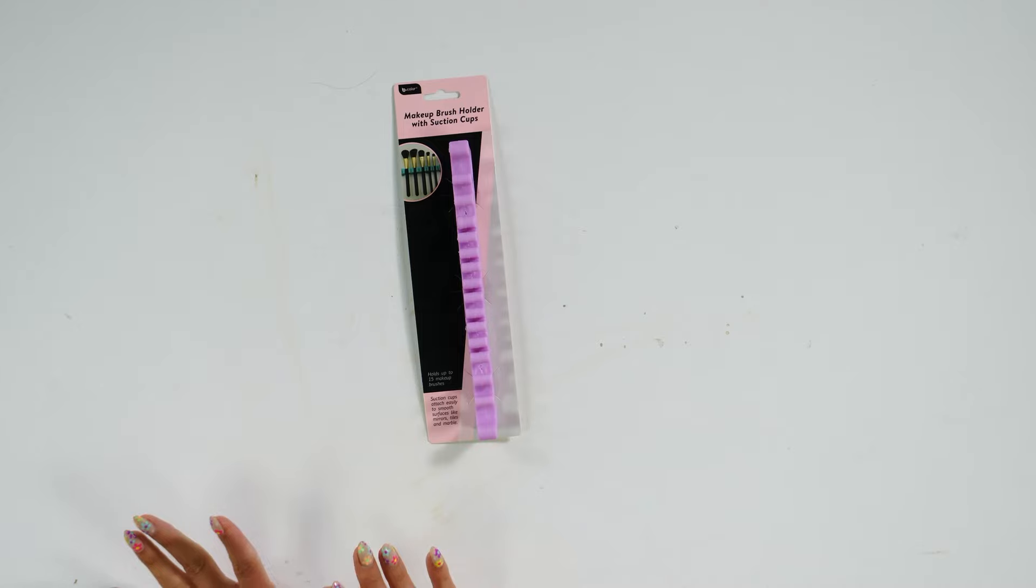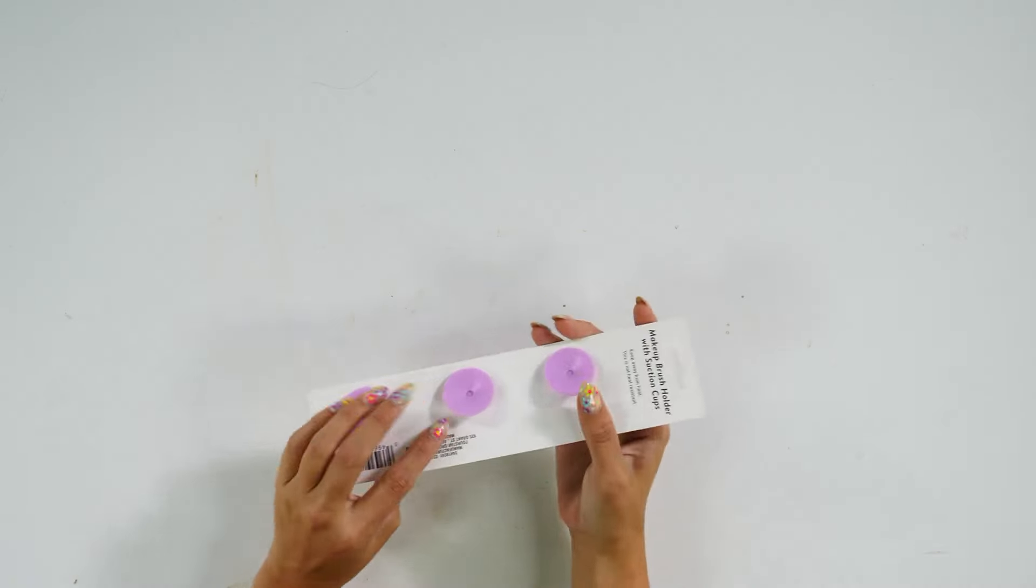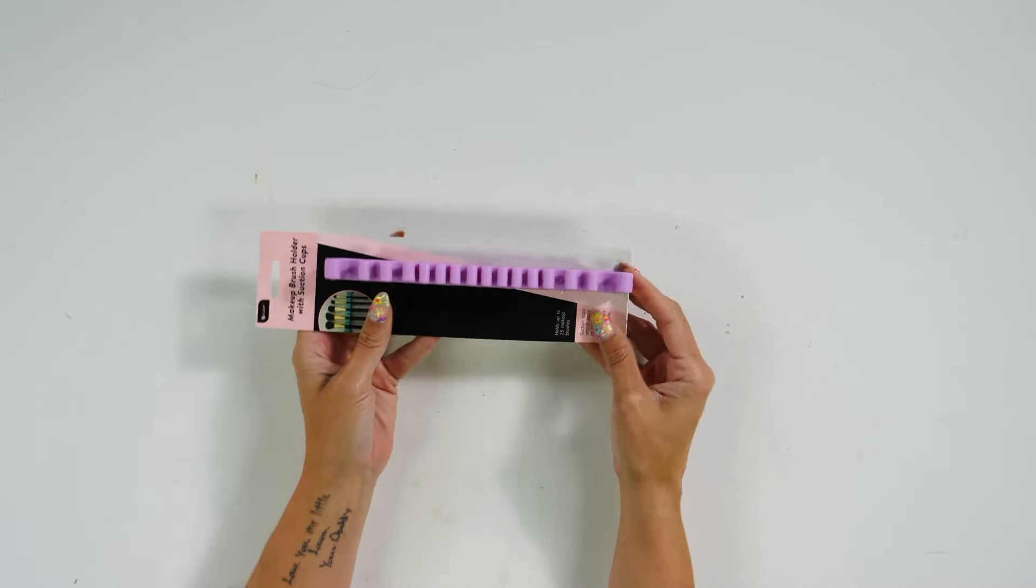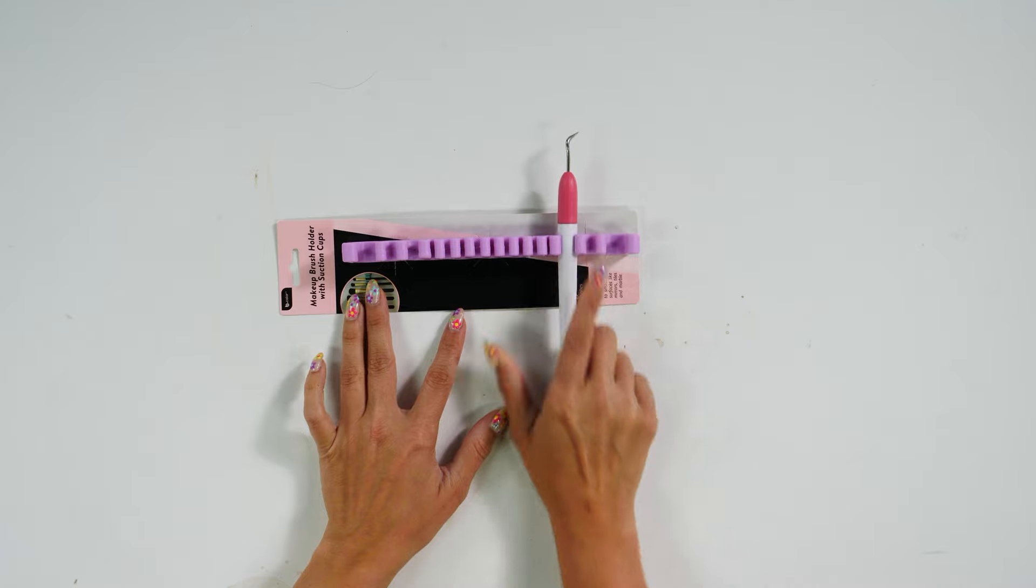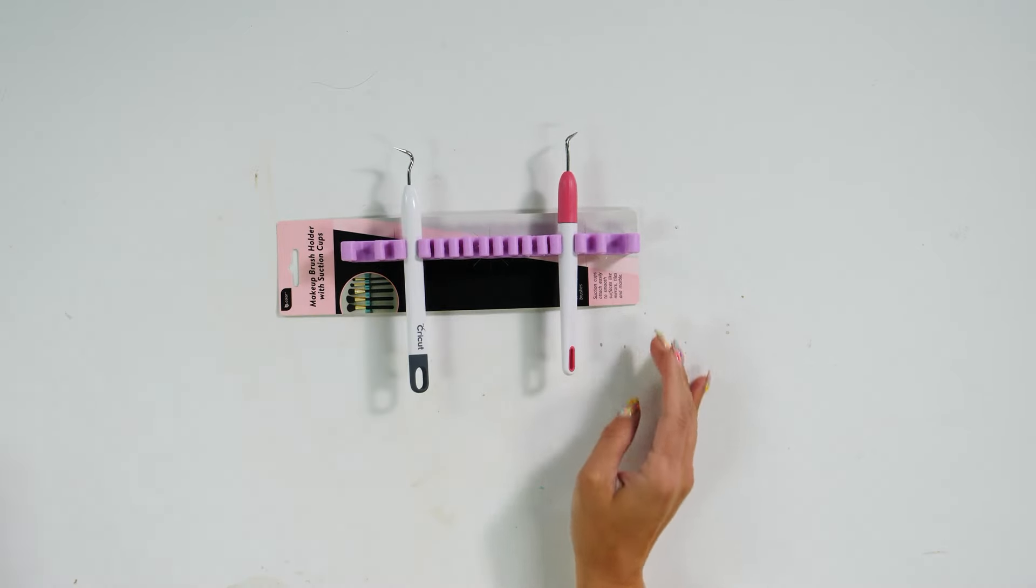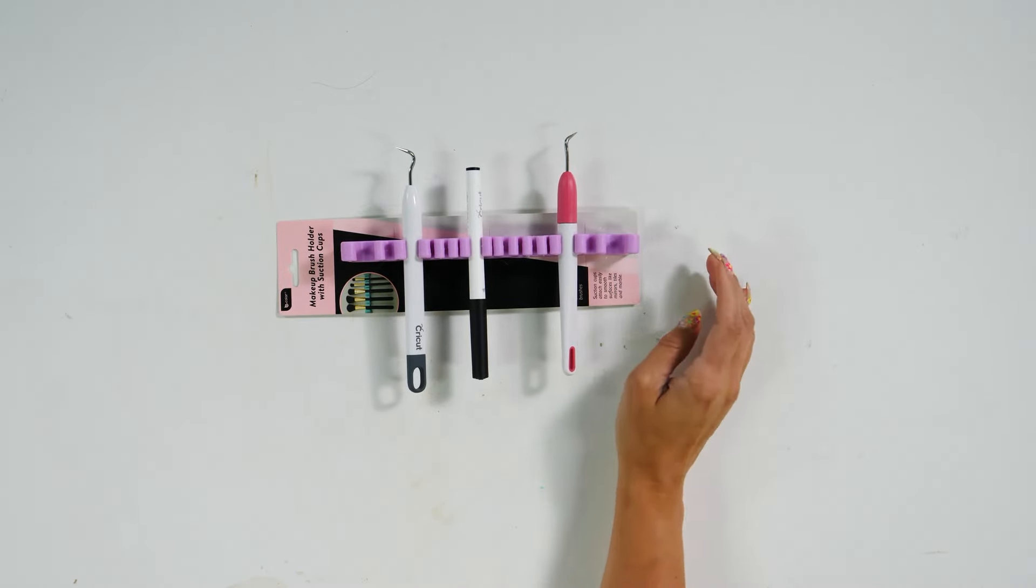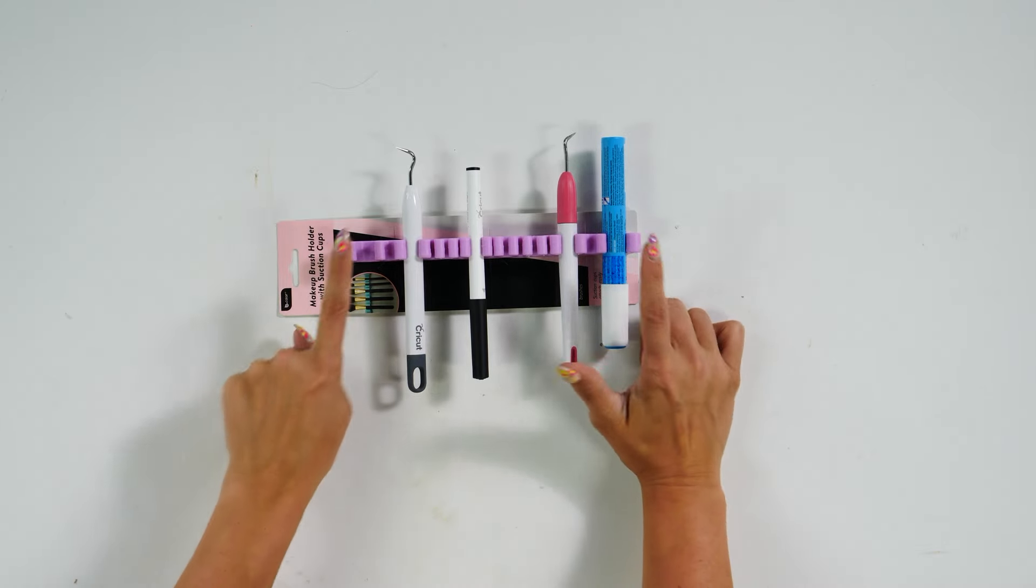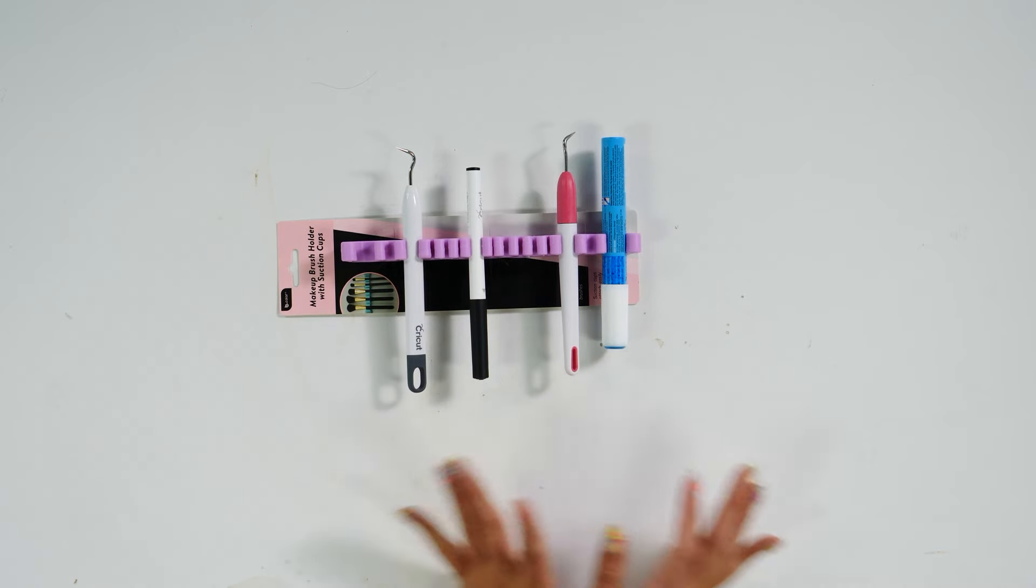The first thing we found was in the beauty section, and this is a makeup brush holder with suction cups on the back. This would be a great tool to hold some of your weeding tools. You could place them in. You could also do Cricut pens in the middle. You could put your zig pen over here. It has bigger slots on the side and smaller ones in the middle.